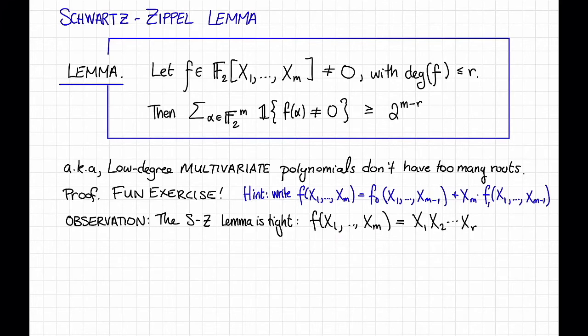A corollary of both the lemma and the observation is that the distance of the Reed-Muller code with parameters M and R is exactly 2 to the M minus R. Indeed, this lemma is exactly saying that any non-zero Reed-Muller codeword has at least 2 to the M minus R non-zeros. Since it's a linear code, that means that the distance is at least 2 to the M minus R, and this example from our observation shows that the distance is at most 2 to the M minus R, so therefore it's equal to that.